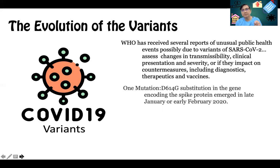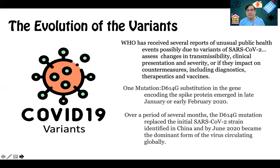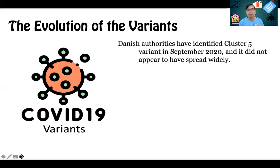A mutation first emerged around February 2020, far different from the original SARS-CoV-2 found in China. Over several months, it became the predominant variant, replacing the initial strain, so that by June 2020 it became the dominant form of the virus circulating globally. Some subsequent clusters were no longer considered significant because they did not appear to affect transmissibility or severity.